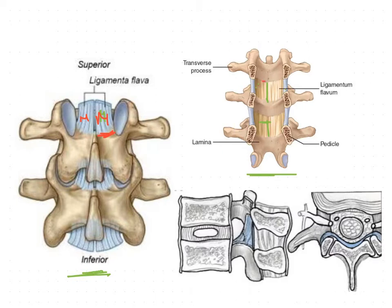The medial fibers attach on the anterior aspect of the laminae of the above vertebra, then run downward between the two adjacent vertebrae, come backward, and attach on the posterior aspect of the inferior adjacent laminae.